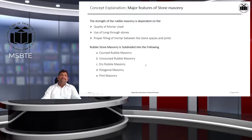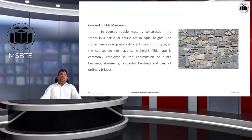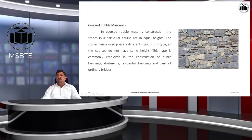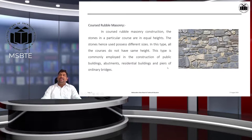Rubble masonry is subdivided into: coarse rubble masonry, uncoursed rubble masonry, dry rubble masonry, polygonal masonry, and flint masonry. In coarse rubble masonry, stones in a particular course are of equal height, though different courses may not have the same height. Stones possess different sizes. This type is commonly employed in the construction of public buildings, residential buildings, and piers of ordinary buildings.